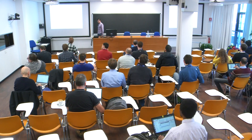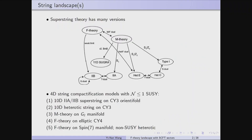We know that superstring theory has many different versions — or you can call them different limits or different descriptions — including 10-dimensional superstring theory, 11-dimensional M-theory, and some fictional 12-dimensional F-theory. They are dual to each other on different geometries, so you can think about it as different corners of the whole large connected network.